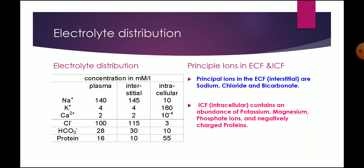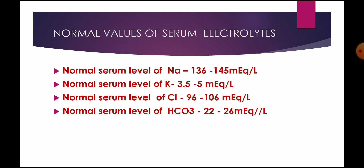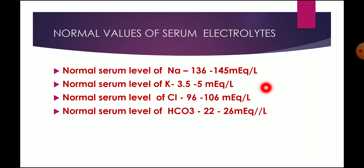The principal ions in the extracellular fluid are sodium, chloride, and bicarbonate. The intracellular fluid contains an abundance of potassium, magnesium, phosphorus ions, and negatively charged proteins. The important things to remember are sodium, potassium, bicarbonate, and chloride. The normal serum level of sodium is 136 to 145 milliequivalents per litre. Note that electrolytes are always expressed in milliequivalents per litre or millimoles per litre. Serum potassium is 3.5 to 5, serum chloride is 96 to 106, and bicarbonate is 22 to 26 milliequivalents per litre.